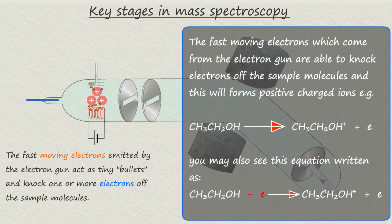So for example the two equations shown represent the ionization of the alcohol molecule ethanol to form a molecule with a one plus charge.